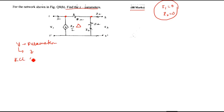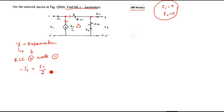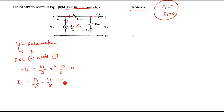Apply KCL at node 1. I1 current is incoming; these two are outgoing. So minus I1 plus Ix by 2 plus V1 minus V2 divided by 8 equals 0. Simplifying: I1 equals Ix by 2 plus V1 by 8 minus V2 by 8. Call this equation number 1.